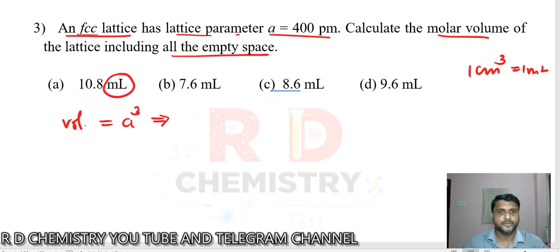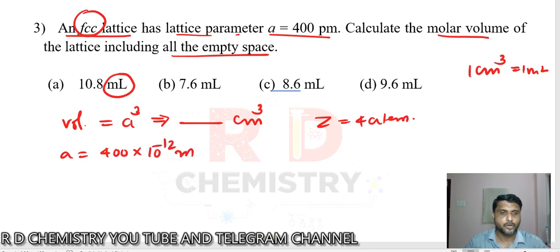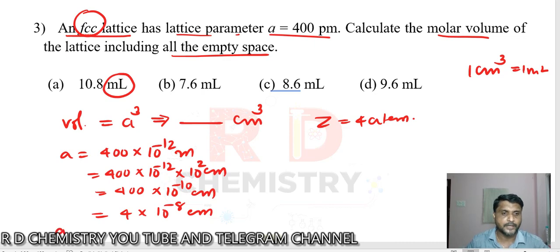One centimeter cube is equal to one ml. This is for only one particle. When you see FCC, it is equal to 4 atoms. The volume, a = 400 picometer = 400 × 10^-12 meter, or 400 × 10^-10 centimeter, or 4 × 10^-8 centimeter. Now I will do a cube.